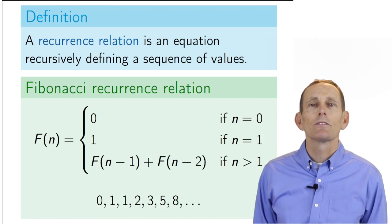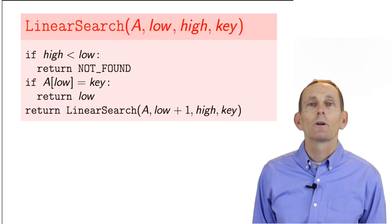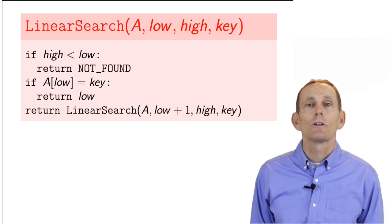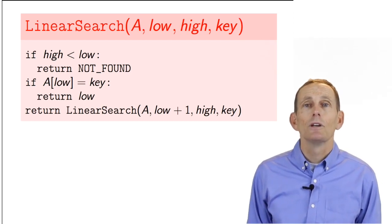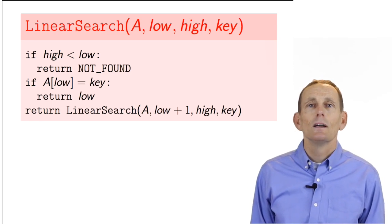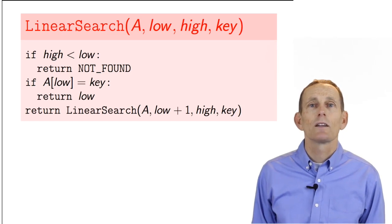When we're doing runtime analysis for divide-and-conquer algorithms, we usually define a recurrence relation for T of n, where T stands for the worst-case time taken for the algorithm and n is the size of the problem. For this algorithm, the worst-case time is when an element isn't found because we must check every element of the array. In this case, we have a recursion for a problem of size n which consists of a subproblem of size n minus 1 plus a constant amount of work.